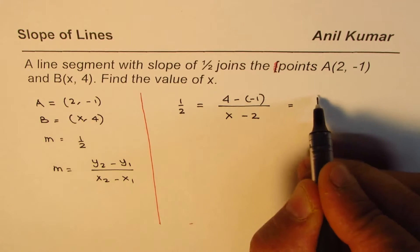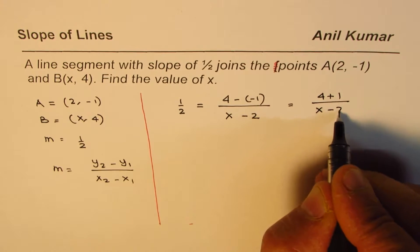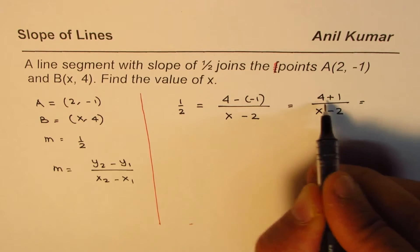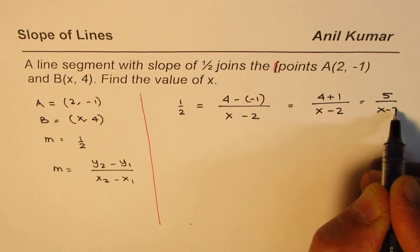This could be written as (4 + 1) over (x - 2). Now, we'll cross multiply to solve for x. Well, 4 plus 1 is 5, so let me rewrite this as 5/(x - 2).